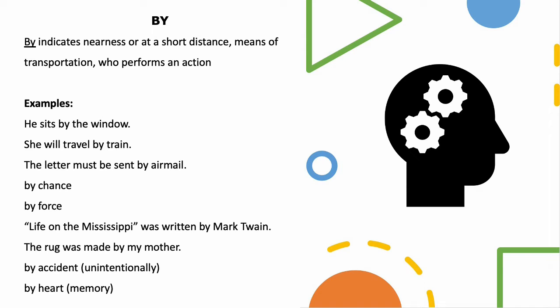Life on the Mississippi was written by Mark Twain. So who wrote Life on the Mississippi? Mark Twain. Mark Twain performs the action of writing. Written by Mark Twain.